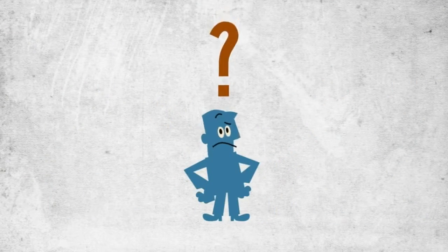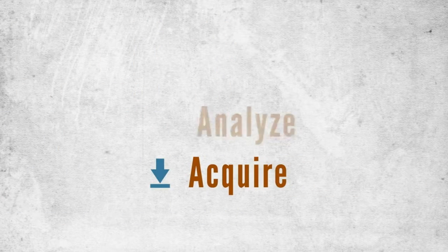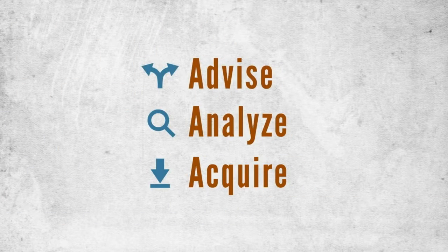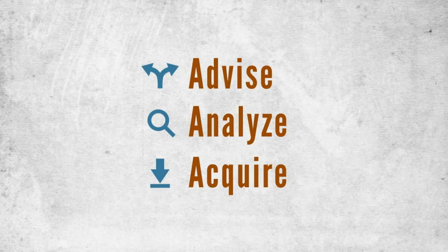But, how does it all work? Acquire, analyze and advise. In short, that is the CopperTree Kaizen.